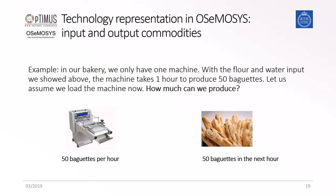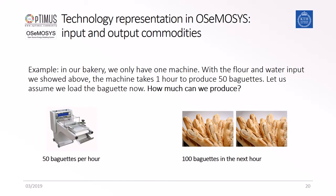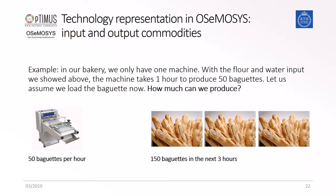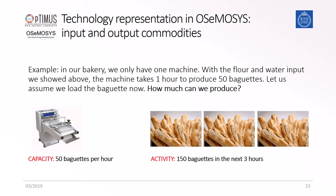Let's look at the baking machine again. Let's say it takes one hour to produce 50 baguettes. We can therefore not produce 100 baguettes in one hour. Rather, it will take two hours to produce 100 baguettes, and three hours to produce 150 baguettes. So the capacity of the technology baking machine is 50 baguettes per hour, and the activity is 150 baguettes in three hours.